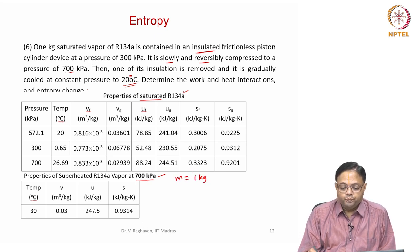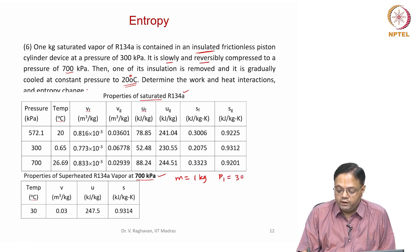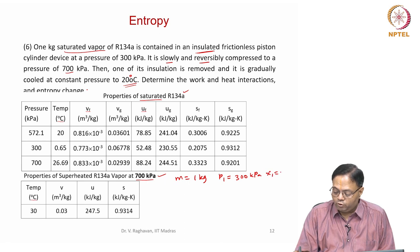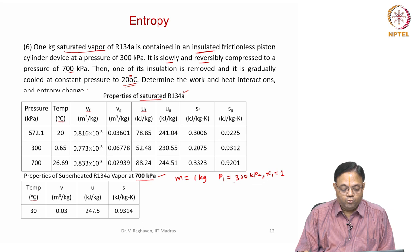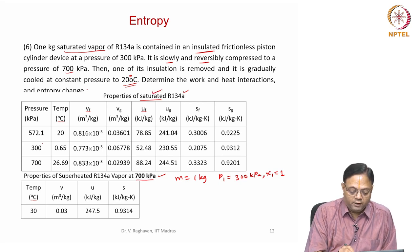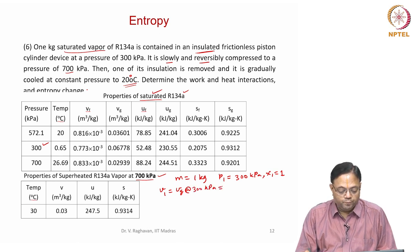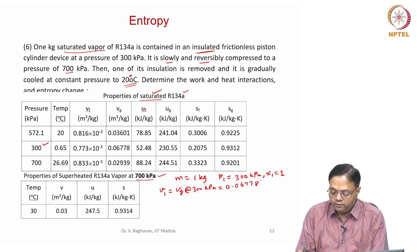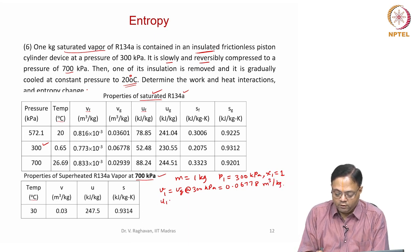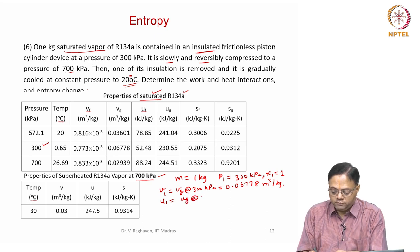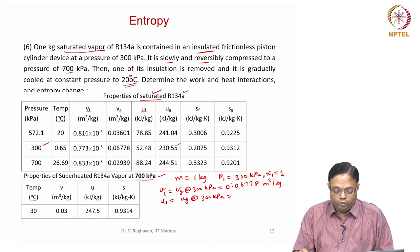Mass is 1 kg. The initial pressure is 300 kilo Pascals and it is given as saturated vapour, so x1 equals 1. That means you can go to the saturation table. Corresponding to a pressure of 300 kilo Pascals, we take V1 as Vg at 300 kilo Pascals which equals 0.06778 m³/kg. Similarly, U1 equals Ug at 300 kilo Pascals which equals 230.55 kJ/kg.